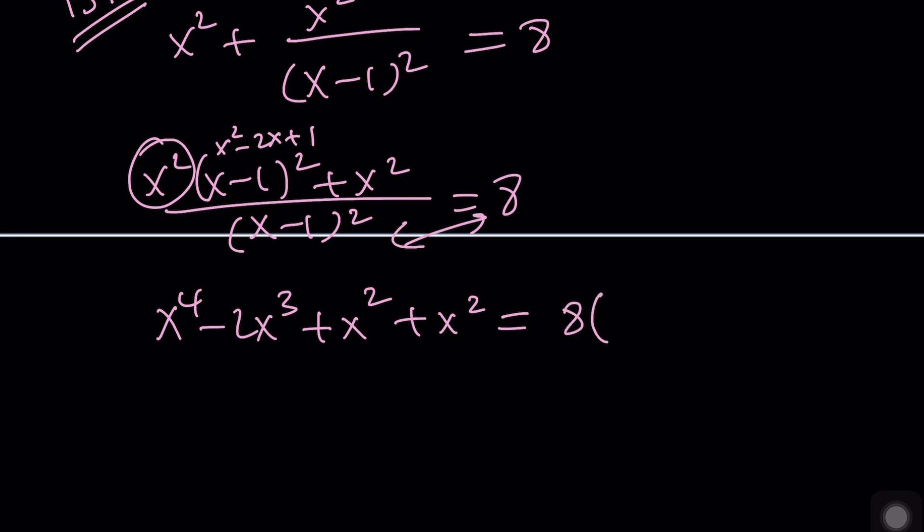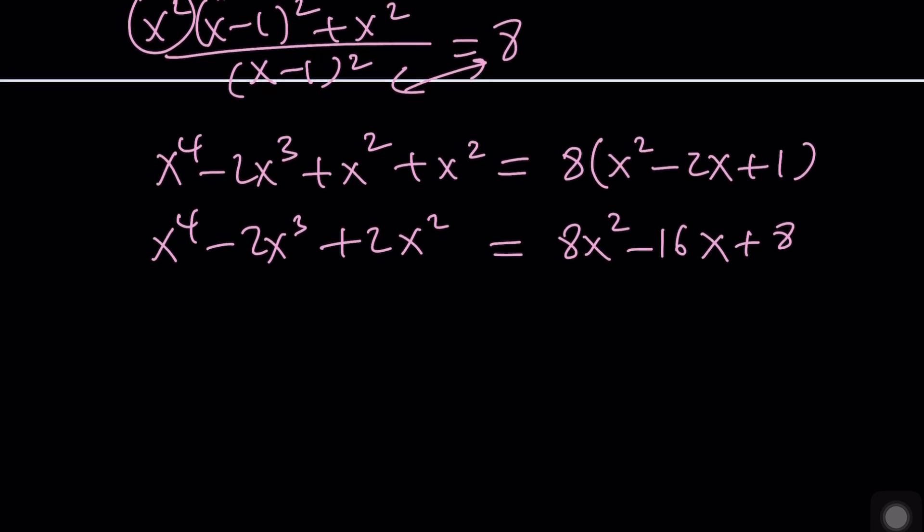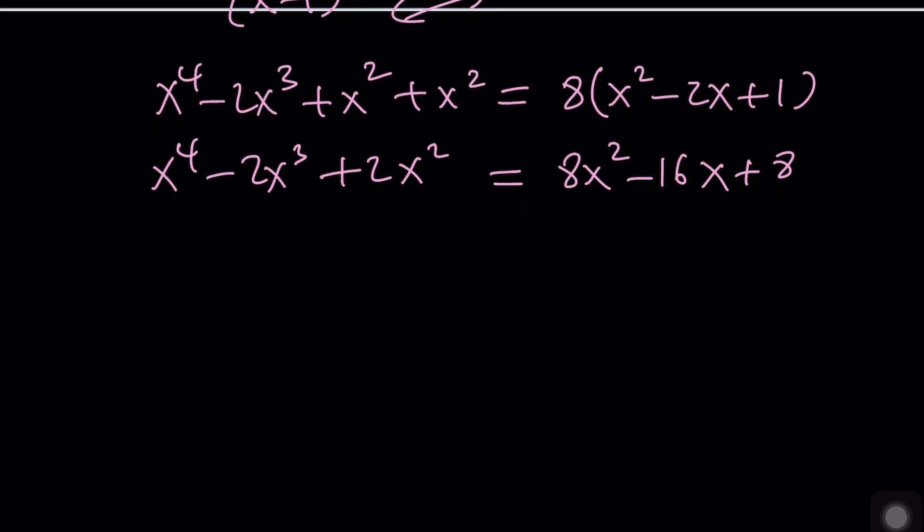And then cross-multiply these while expanding the same thing. Let's distribute and combine like terms. Now, let's put everything on the same side to make this a full quartic.